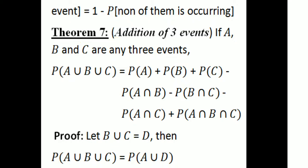The next theorem is Theorem 7: addition of 3 events. If A, B, and C are any 3 events, then probability of A union B union C equals probability of A plus probability of B plus probability of C minus probability of A intersection B minus probability of B intersection C minus probability of A intersection C plus probability of A intersection B intersection C.